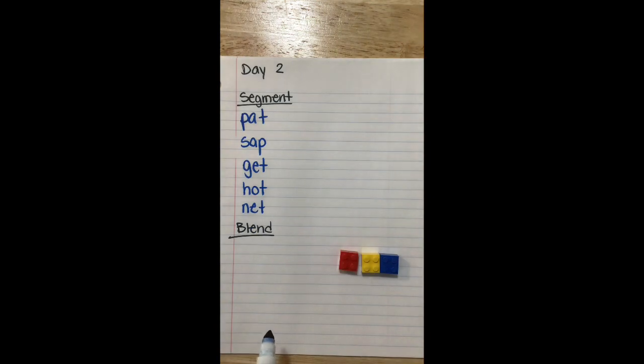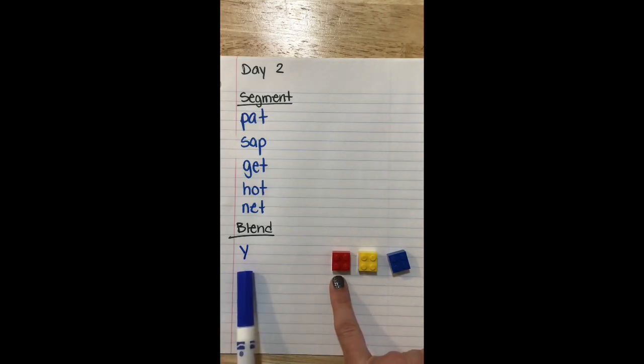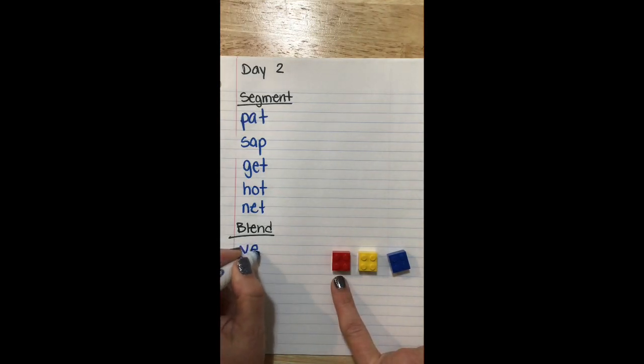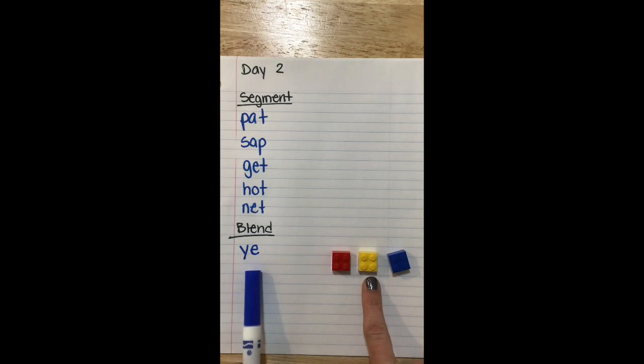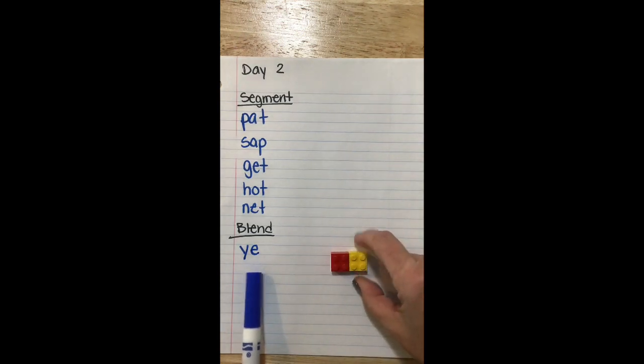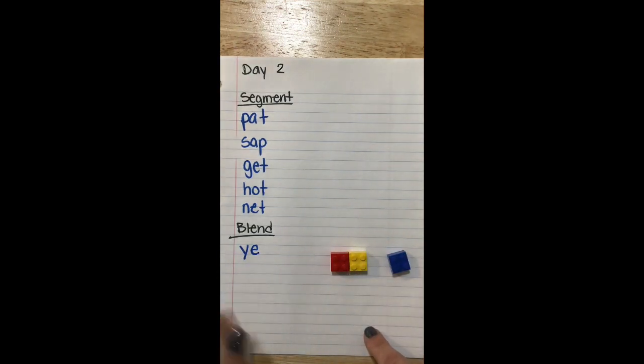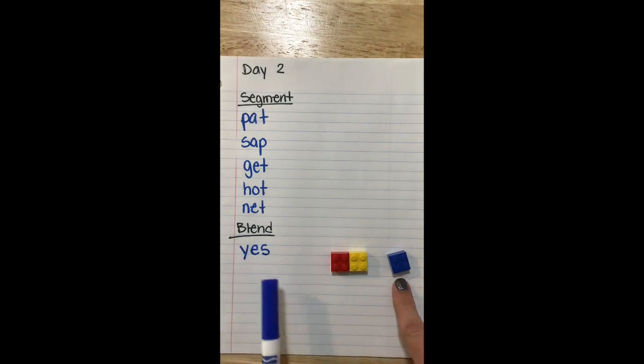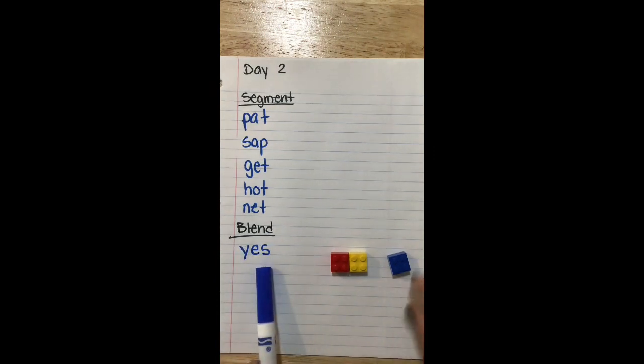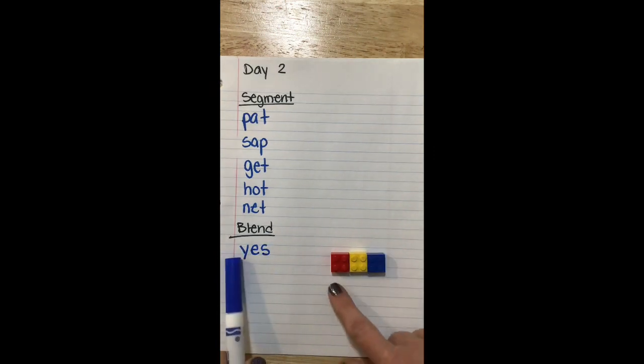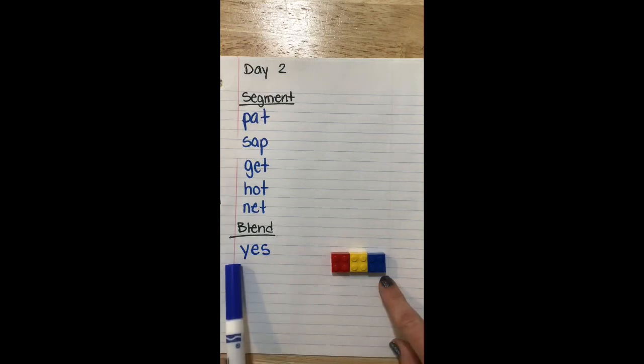All right, now with our blending. Our first sound, Y. Sound, EH. Blend, Y. Sound, S, blend, YES. Word, YES.